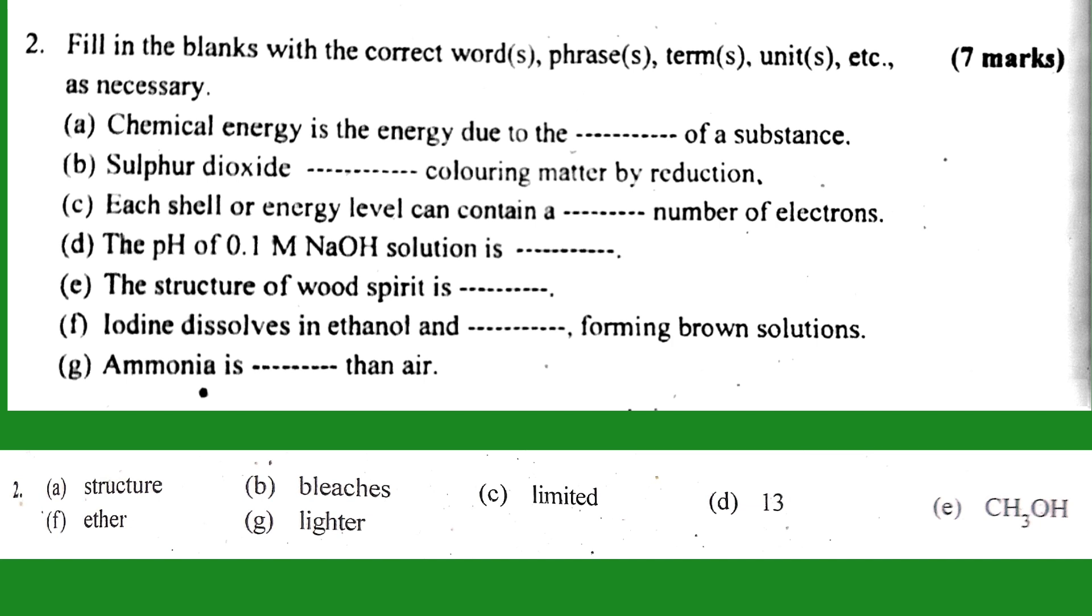Number E: the structure of wood spirit is CH₃OH. CH₃OH is the methanol formula - the structure of wood spirit is methanol. Number F: iodine dissolves in ethanol and ether, forming brown solutions. The answer is ether. Number G: ammonia is lighter than air. The answer is L-I-G-H-T-E-R, lighter.